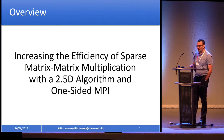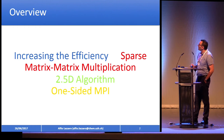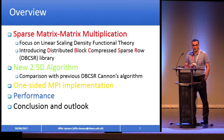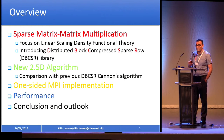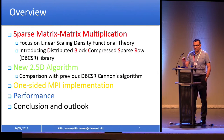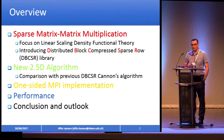I will not read the title again, but you can take the major points from it. I will give you an overview of sparse matrix multiplication — SpGEMM — and I will focus on linear-scale density functional theory. Then I will introduce our library called DBCSR, which stands for Distributed Block Compressed Sparse Row, and I will introduce the new algorithm we are implementing in this library, based on the 2.5D algorithm and one-sided MPI implementation. Then I will discuss some performance results and finally the conclusion and outlook.